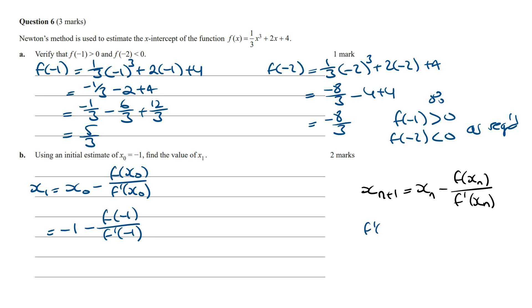f'(x), deriving f(x), is going to equal x² plus 2. And so f'(-1) is going to be (-1)² plus 2 which is going to be 1 plus 2 which is equal to 3.